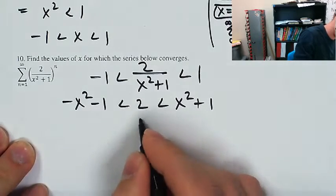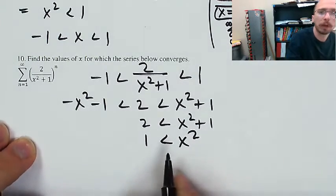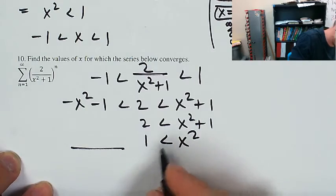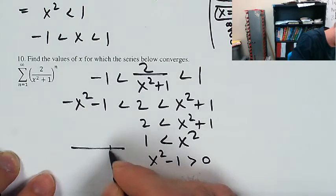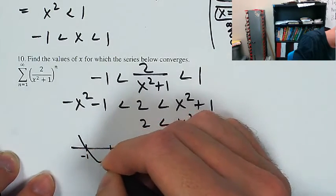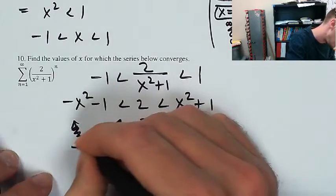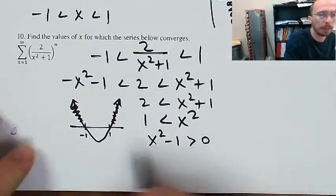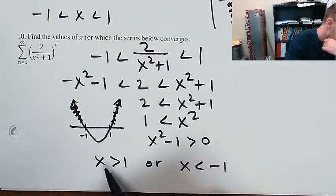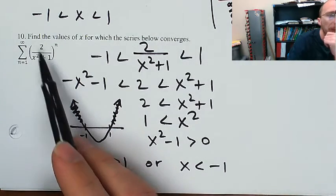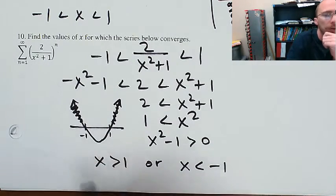Now I deal with each inequality separately. The left one says a negative number is less than 2 — that's vacuous, it's not telling me any new information. The right inequality, 2 < x² + 1, gives x² > 1, which factors as (x+1)(x-1) > 0. That's positive when x > 1 or x < -1. Testing the endpoints: at x=1 or x=-1, I get 2/2 = 1 to the n, which is just adding a bunch of 1s — that diverges. So the solution is x > 1 or x < -1.